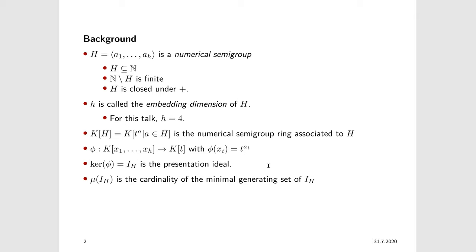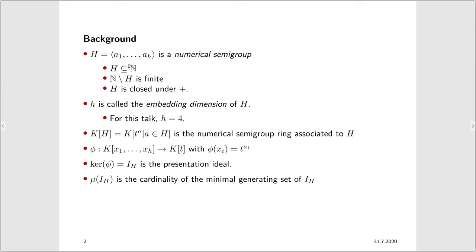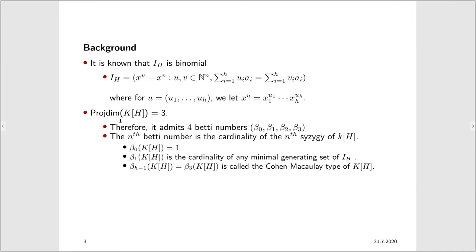A few known results: the presentation ideal is binomial, generated by elements where U and V are H-tuples satisfying a very nice relation — which is natural given this homomorphism where we send Xi to T to the Ai. These are all homogeneous binomials with an exponent tuple. We know that the projective dimension of this semigroup ring, for the case where the embedding dimension is four, the projective dimension is three. The easiest way to see this is to use the Auslander-Buchsbaum formula. Since the projective dimension is three, it admits four Betti numbers.